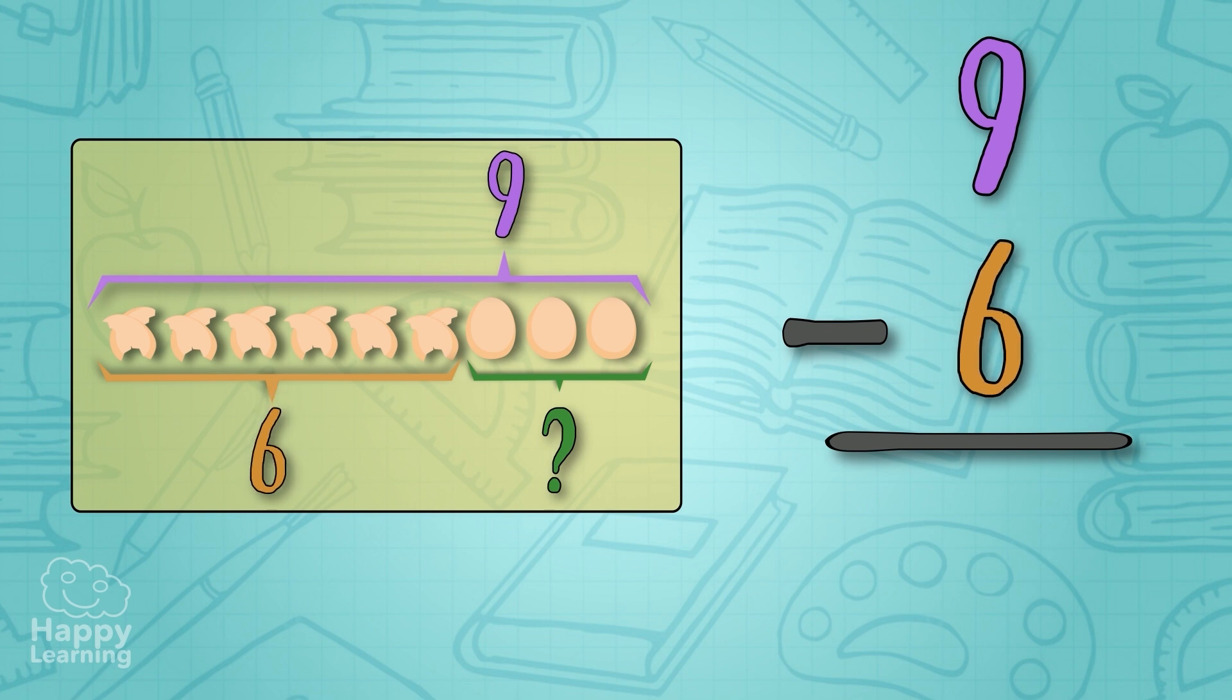Now we can do the subtraction. If out of nine eggs we use six, we've got one, two, and three eggs left. Now we know how to subtract simple figures.